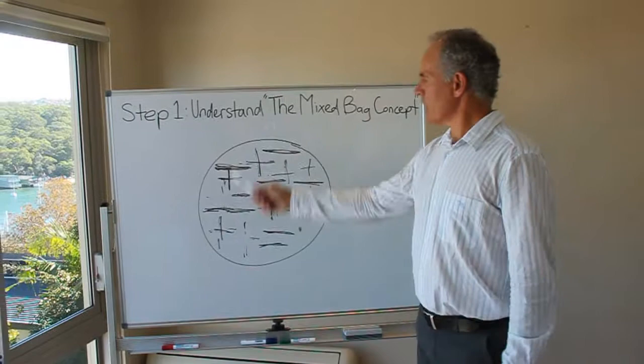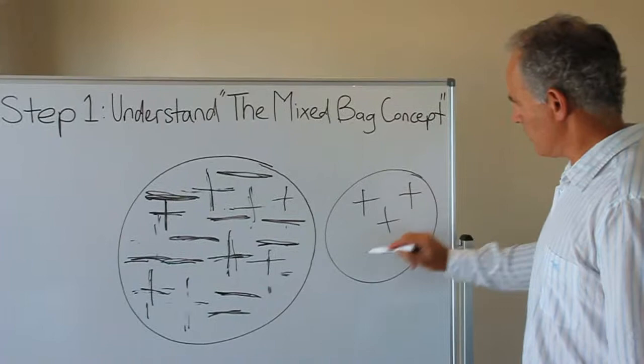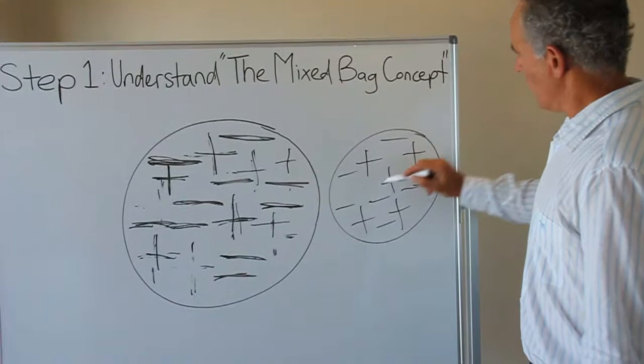So if this looks like a confusing way for any one individual to view themself and try and live their life, imagine how hard it is when they then try and embark on a relationship with somebody else who also sees themself as a bit of a mixed bag with some good qualities and interests and talents and attributes within them, but also a few negatives as well.